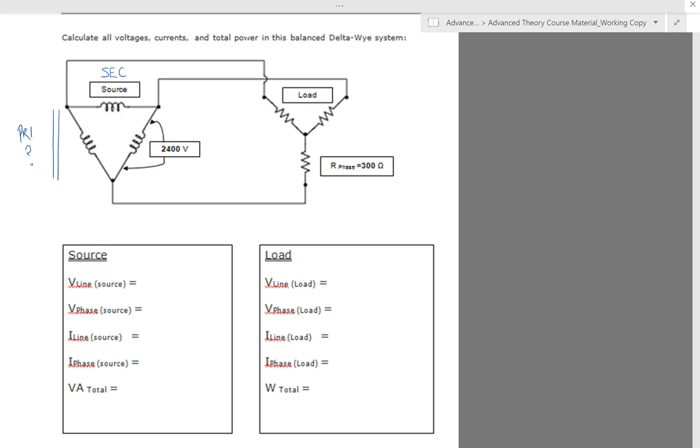All right, next one, number 11. This one is a delta secondary. So we have our transformer right here, primary, secondary. Secondary is wound as a delta. That's feeding a three-phase Y resistive load.